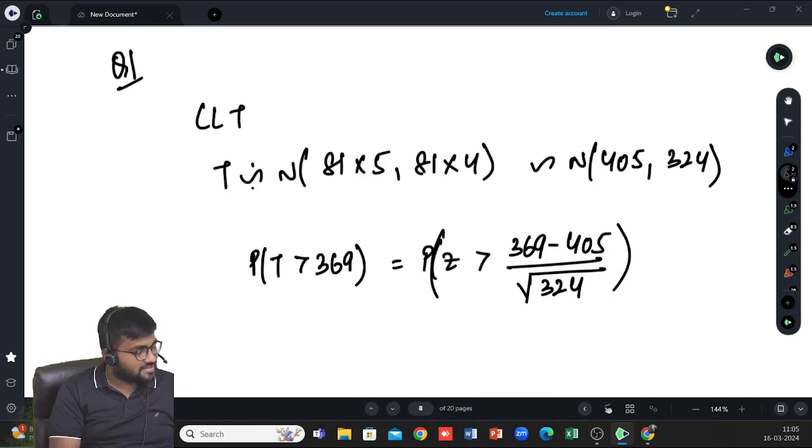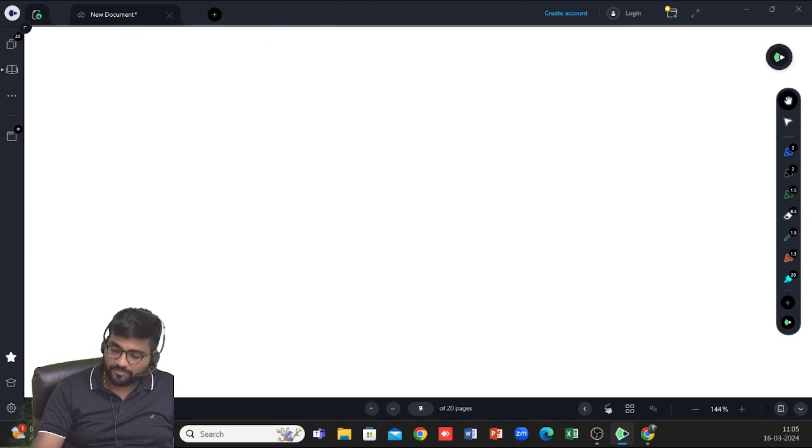A pair of fair six sided dice is rolled once. Identify which one of the following options gives the probability that the sum of the two dice is 7. Sum of the two dice is 7 can happen in 6 ways. So 6 by 36 which is 1 by 6. So the second answer is correct.